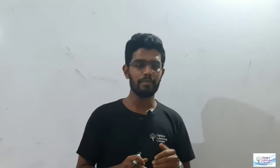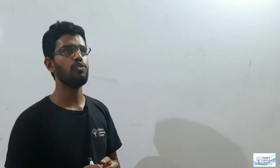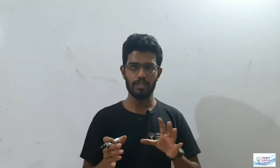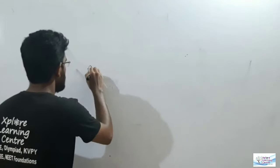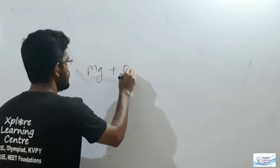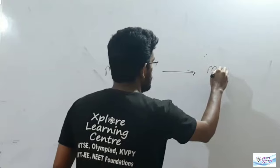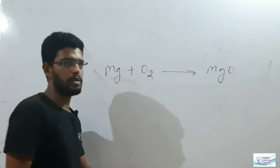As you know, whenever we burn something we need to have oxygen; without oxygen it cannot burn. This is the process of burning where magnesium metal reacts with oxygen and magnesium oxide is formed.